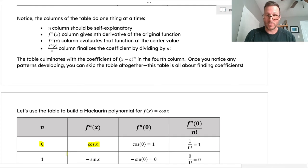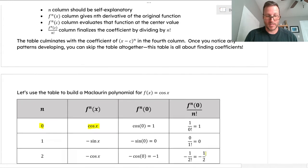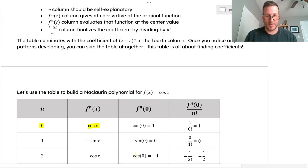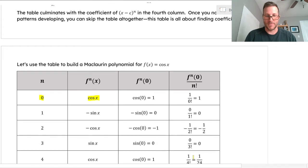The first derivative of cosine is negative sine. Negative sine of zero is zero. So that means that's technically a zero coefficient, which actually isn't a term. Then we keep taking derivatives. We get negative cosine x. Negative cosine of zero is negative one. Divide that by two factorial, and you can simplify as you like.